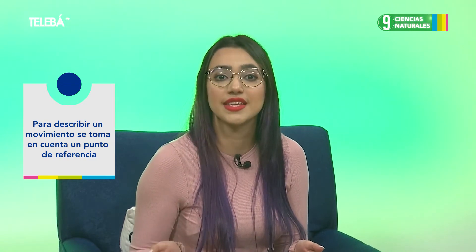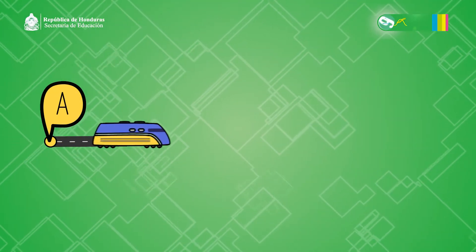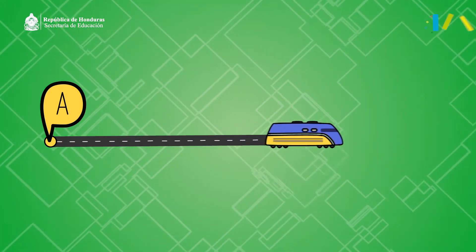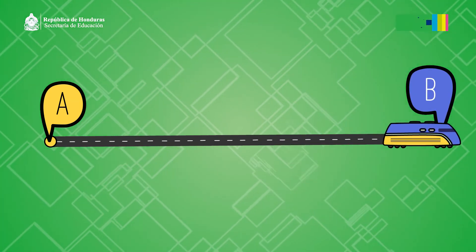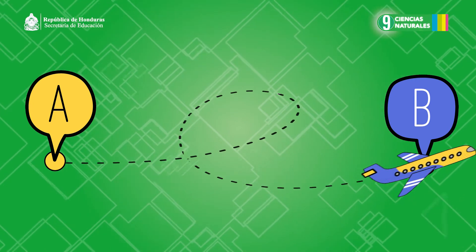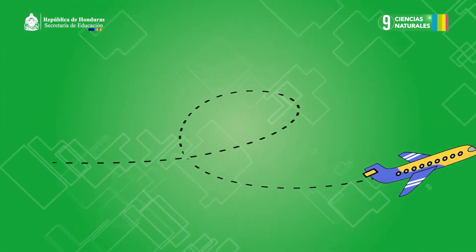Todos los objetos se mueven ya sea con mayor o menor velocidad unos con respecto de otros. A veces el movimiento es imperceptible. Para describir un movimiento se toma en cuenta un punto de referencia; entonces se dice que el movimiento es el cambio de posición que sufre un cuerpo en relación al otro. Los cuerpos al moverse van marcando una línea imaginaria que indica sus cambios de posición: a dicho cambio se le llama trayectoria, la cual puede ser rectilínea o curvilínea. La velocidad es la relación que se establece entre la distancia recorrida y el tiempo transcurrido en el movimiento de un móvil.